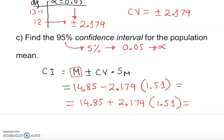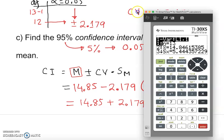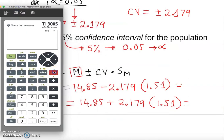If we have this, we can actually plug it in the calculator, right? So if you plug this in the calculator: 14.85 minus 2.179 times 1.51, enter, enter. You see 11 point... the first one giving us 11.560 approximately.